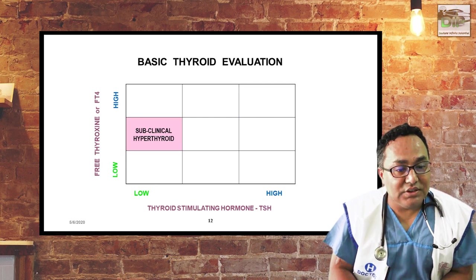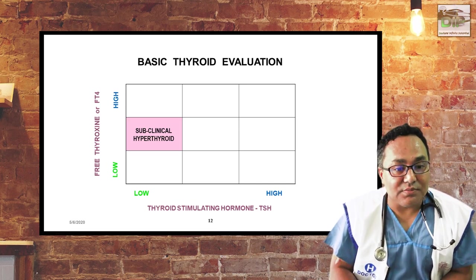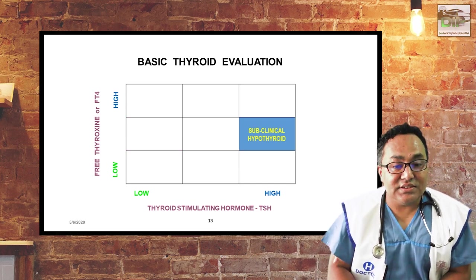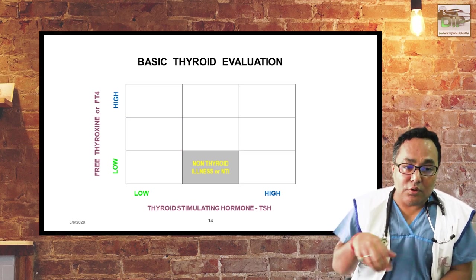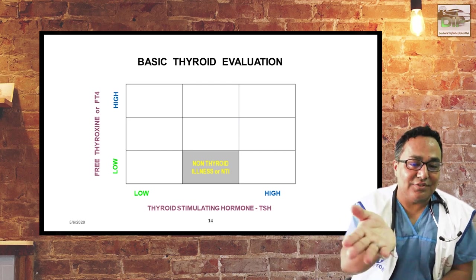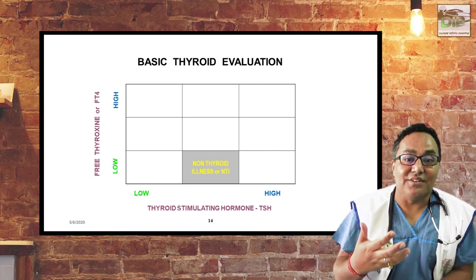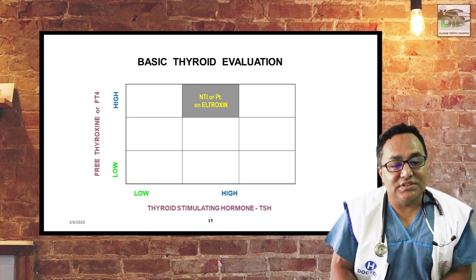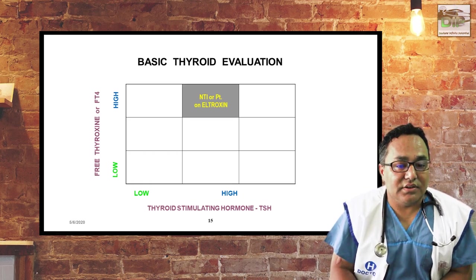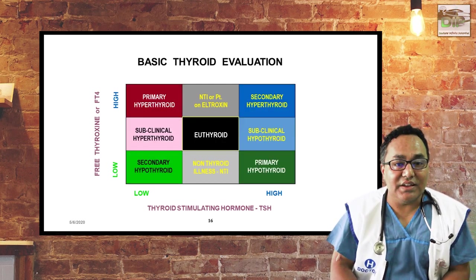If TSH is suppressed and T3 and T4 are normal, it is subclinical hyperthyroidism. If TSH is high and T3 and T4 are normal, it is subclinical hypothyroidism. If T4 is high and TSH is high, it may indicate secondary hyperthyroidism or the patient might be on amiodarone. If TSH is low with normal T4, this can be non-thyroid illness or sick euthyroid syndrome, mainly seen in ICU patients. This nine square game makes diagnosis very easy.